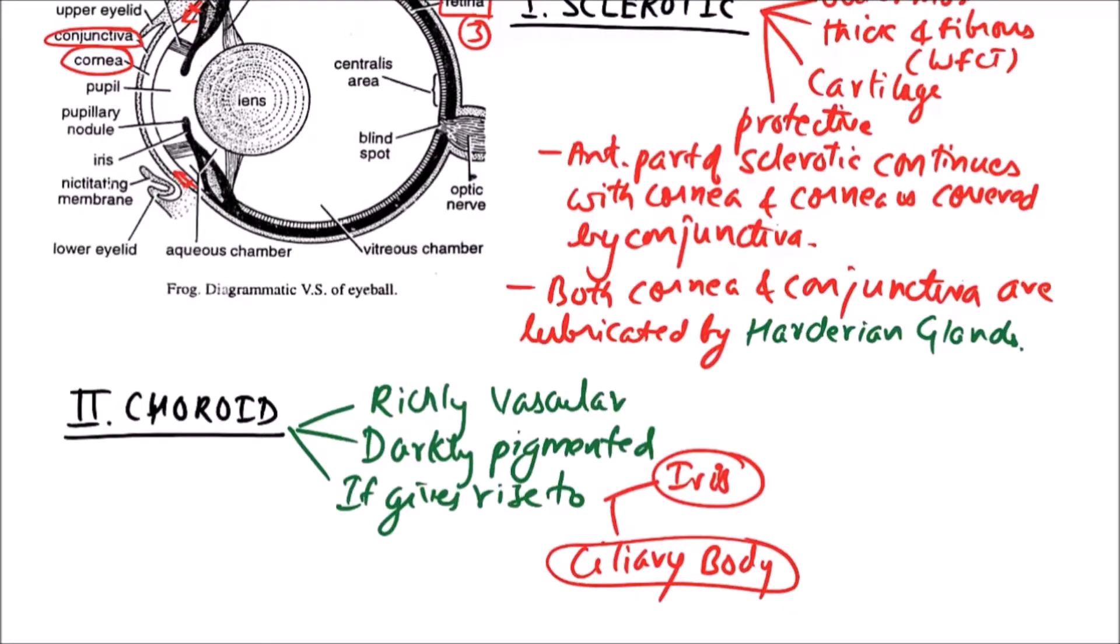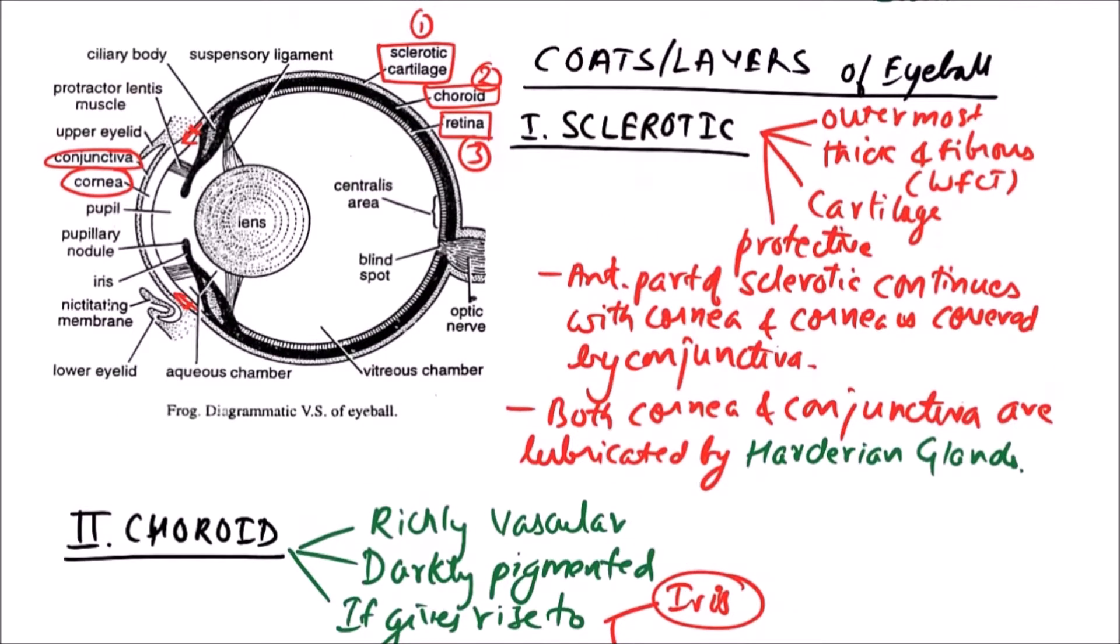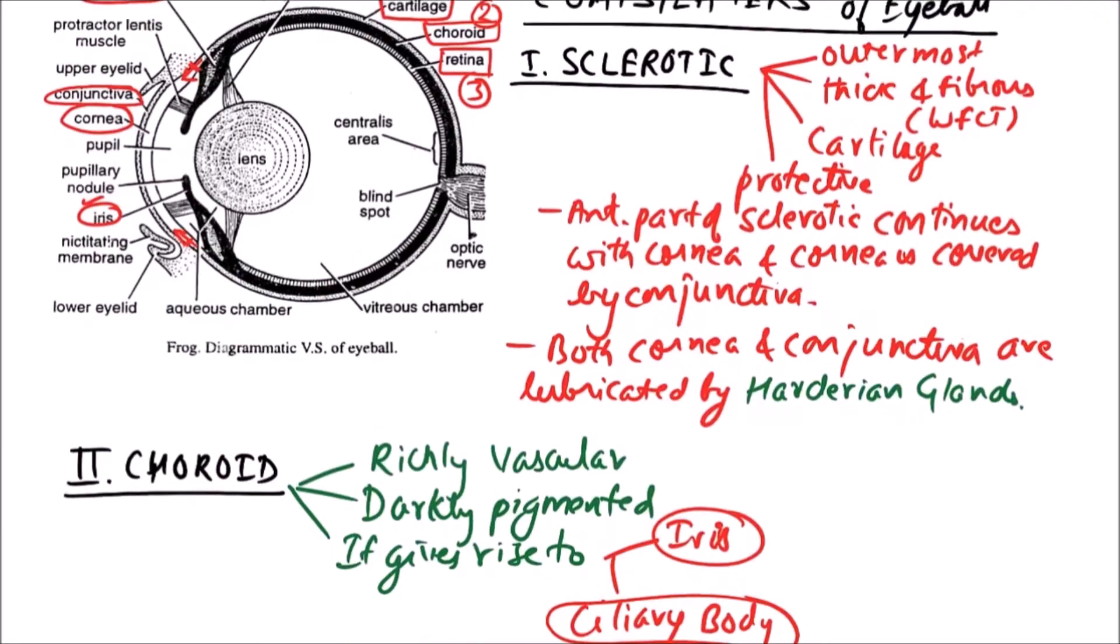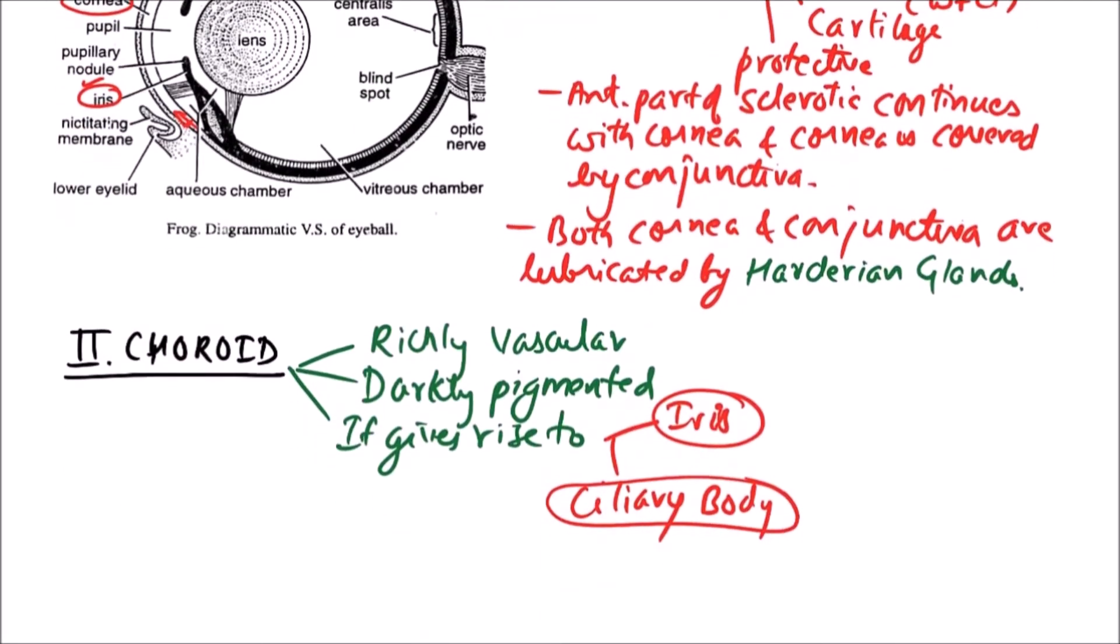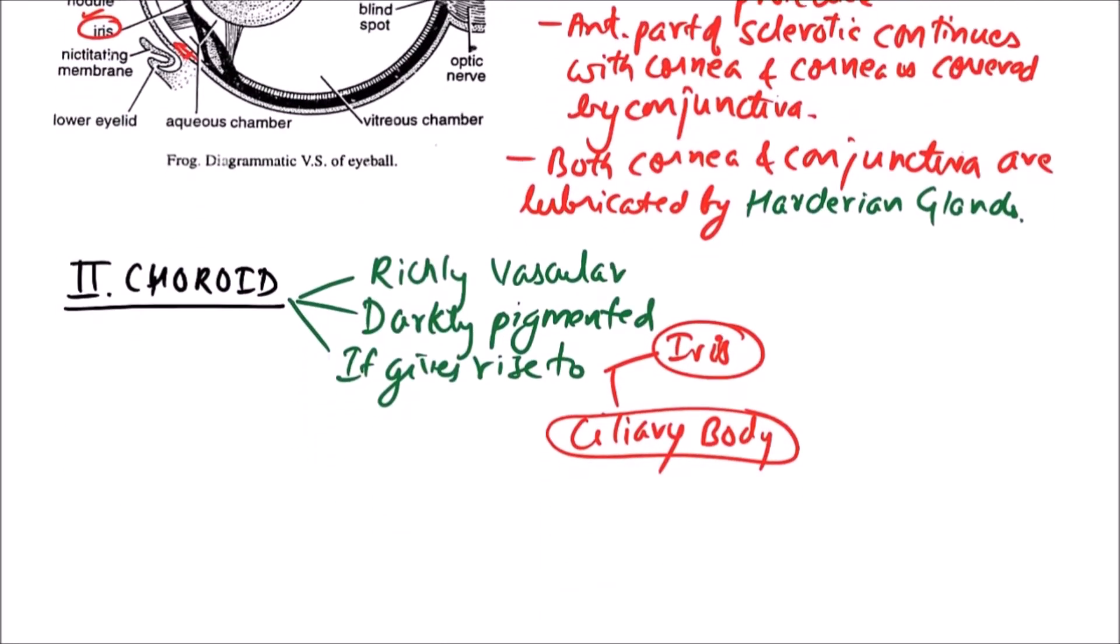We can observe in the diagram, this one is iris and this structure is ciliary body. Posteriorly it gave rise to ciliary body and anteriorly to iris. In comparison to iris, ciliary body is posterior, although both are directed anteriorly.